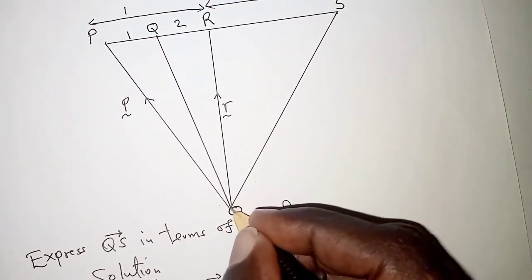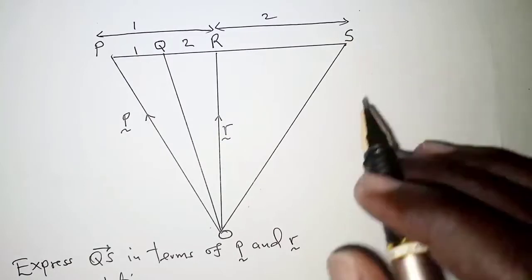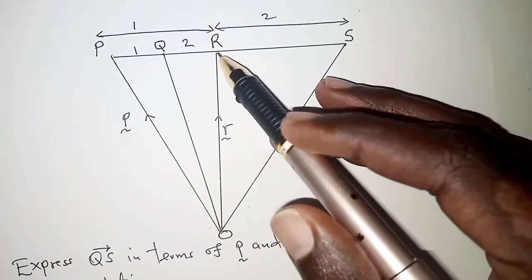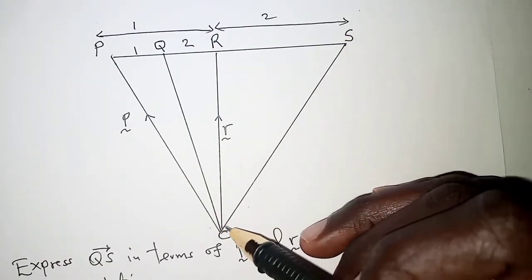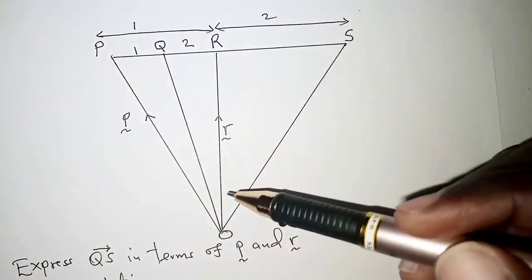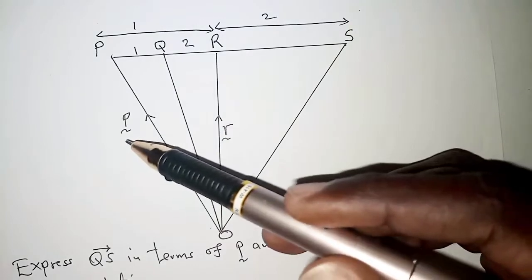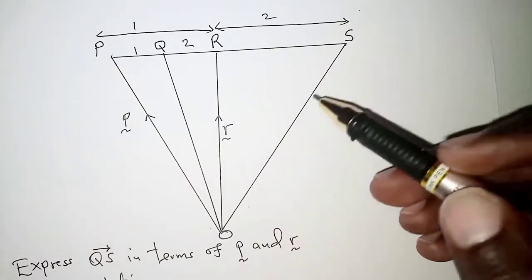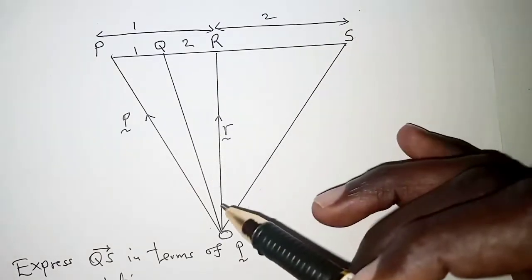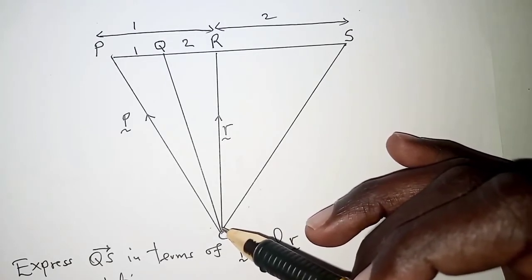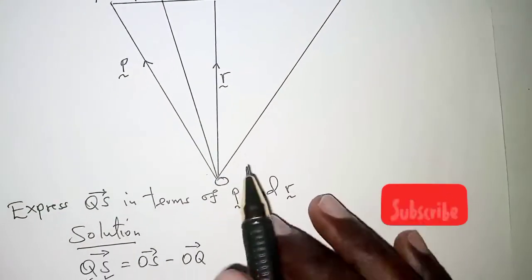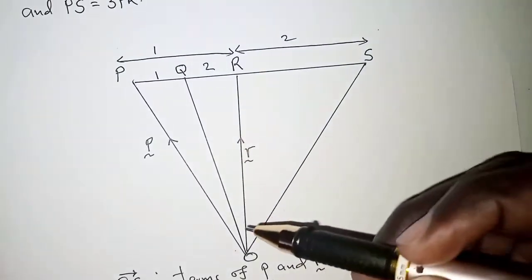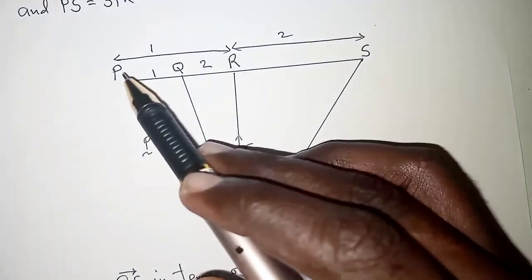To find OS, moving from O to S, we can take the route OR then RS, or we can take OP then PS. We need to take the route that contains r and p, so we should not follow OQ then QS — although that would also give results, it makes it more complicated. We prefer to take the path OP then PS, since we need to express QS in terms of p and r.